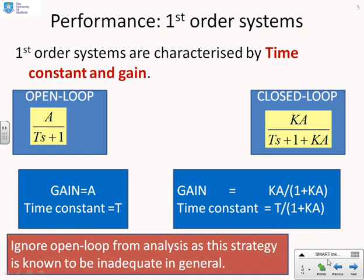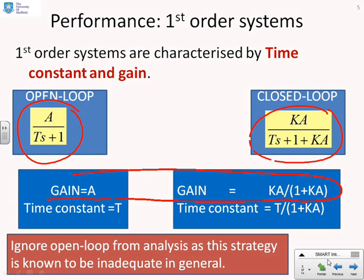This page summarizes what we've got. You'll see the open-loop transfer function A over Ts plus 1 and the closed-loop transfer function KA over Ts plus 1 plus KA. More specifically, we want the reader to notice the changes in gain: the open-loop gain A and the closed-loop gain KA over 1 plus KA, and the open-loop time constant T and the closed-loop time constant T over 1 plus KA. This video will look at those relationships and see how the closed-loop gain and time constant depend on this proportional gain K.